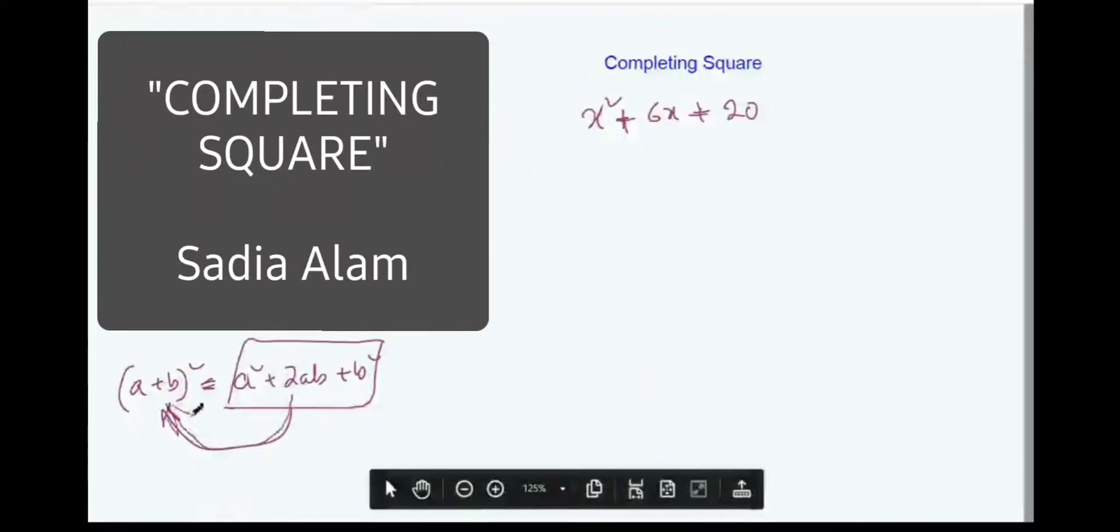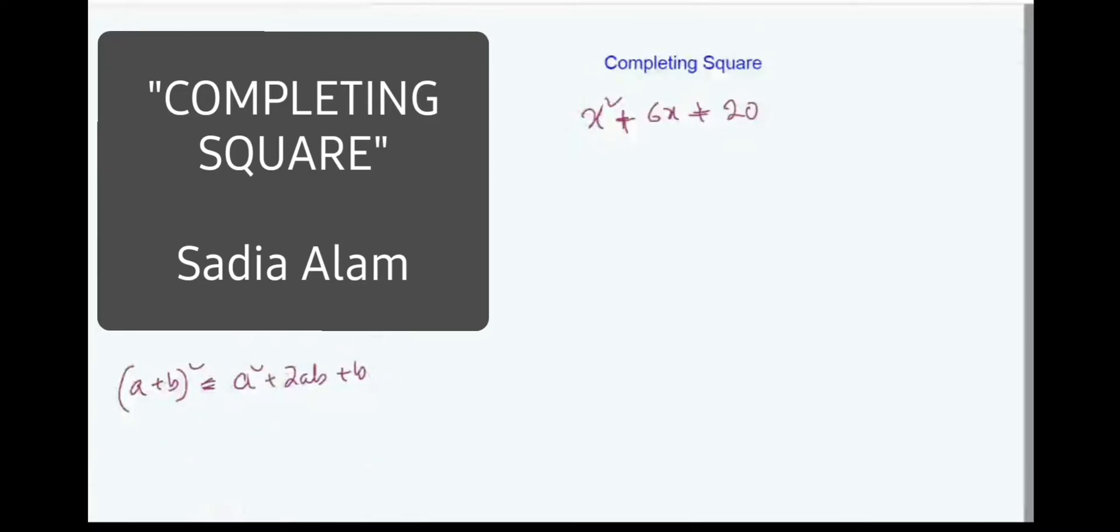You need to convert this entire thing into a plus b whole square. If you compare the first term x square with the formula, we compare the first term x square with a square, so we are done with the first one.